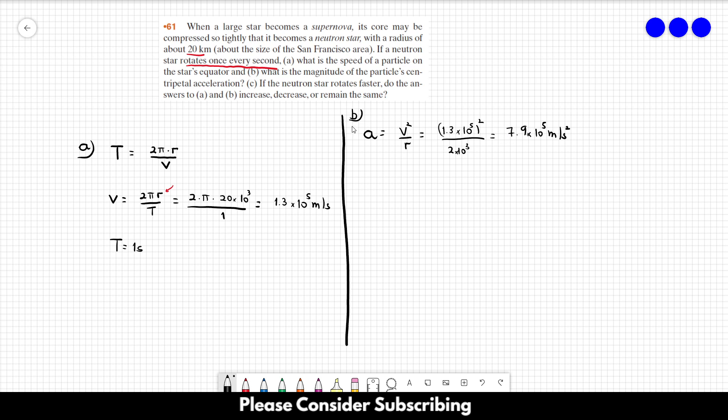For letter C, if the neutron star rotates faster. If it rotates faster, the period would decrease. So for its speed, if this value decreases, the value of the speed increases, right?